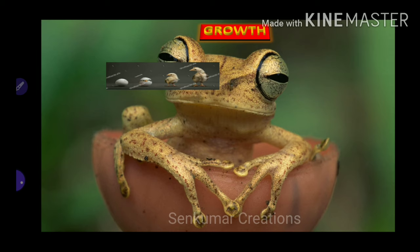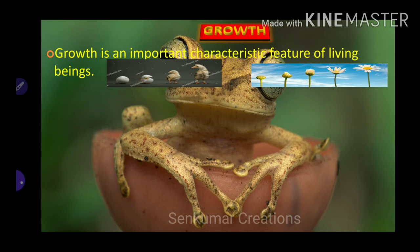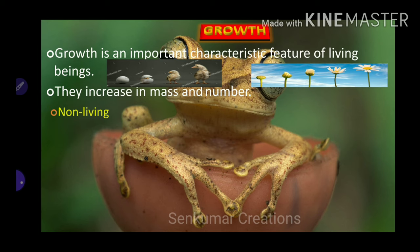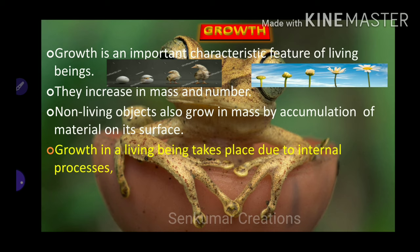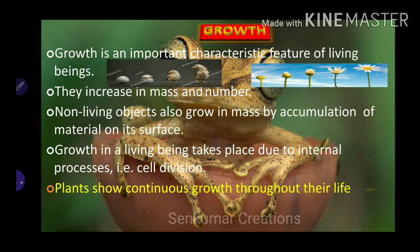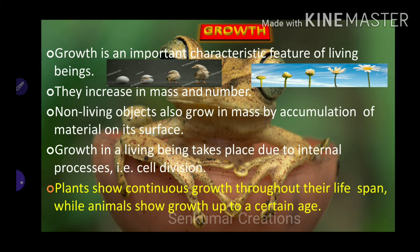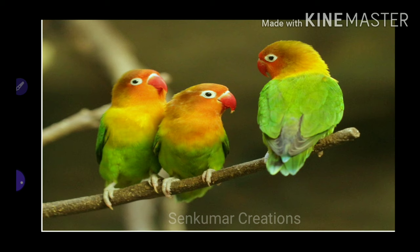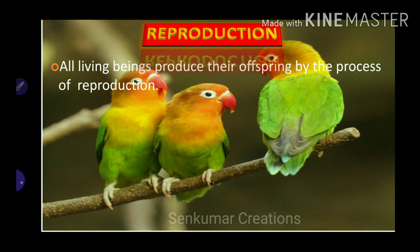Growth is an important characteristic feature of living beings; they increase in mass and number of cells. Non-living objects also grow in mass by accumulation of material on their surface. Growth in a living being takes place due to internal processes, that is cell division. Plants show continuous growth throughout their lifespan, while animals show growth up to a certain age.